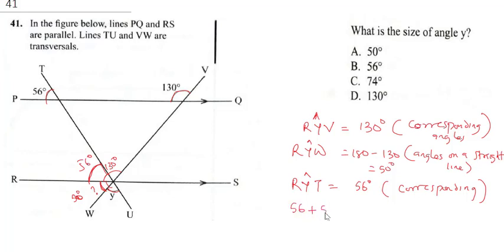So you can see 56 plus 50 plus Y is supposed to give us 180 degree. A reason is still angle on a straight line. Okay? So having established that,